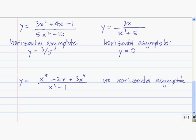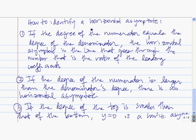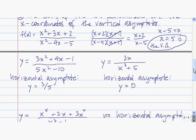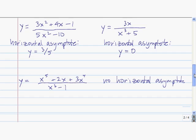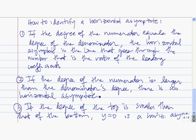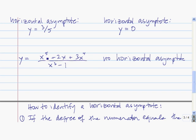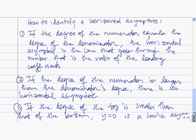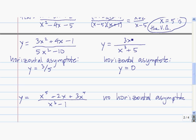Let me summarize these observations. If the degree of the top and the bottom is the same, then the line through the ratio of the leading coefficients is the horizontal asymptote — just like this case where y equals 3 divided by 5. If the degree of the numerator is larger than the degree of the denominator, there is no horizontal asymptote. Finally, if the degree of the top is smaller than the degree of the bottom, the line y equals 0 is a horizontal asymptote.